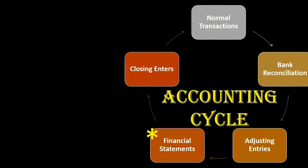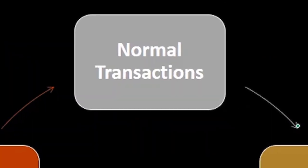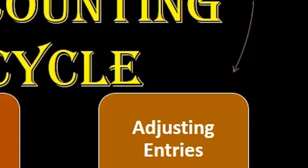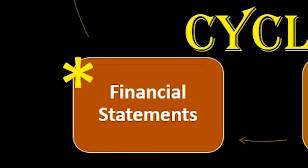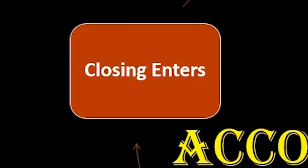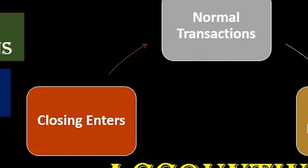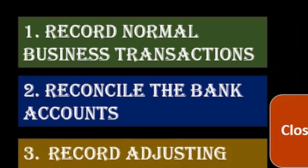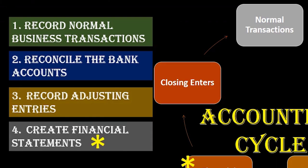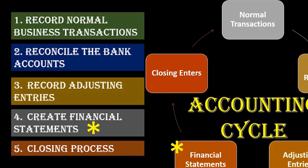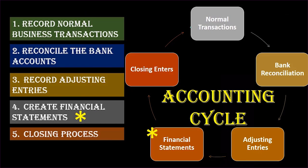Those are the five steps to keep in mind when you have a broad view of what the accounting process is. Start with the normal business transactions — that's what's going on most of the time, the whole month. Then at the end of the month, which is obviously a busy time for the accounting department, we reconcile the bank accounts, do the adjusting journal entries, produce the financial statements — the main event — do the closing process, and then start over again in that order.